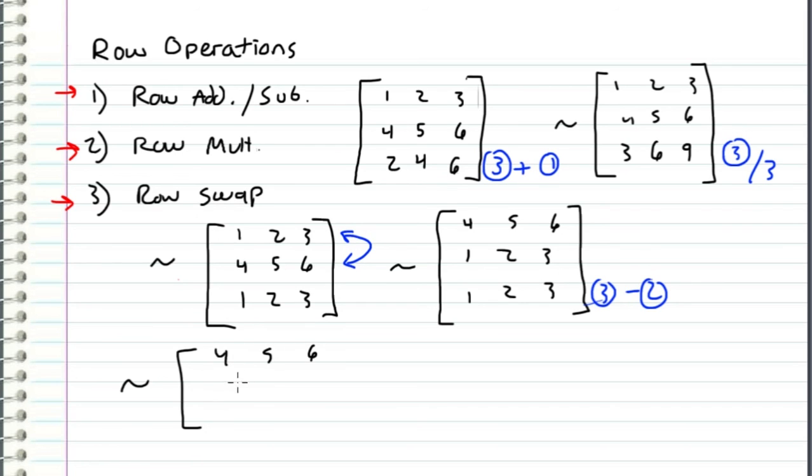four, five, six, one, two, three, and zero, zero, zero. So we can see how these row operations can reduce a matrix into a form that looks more simple. In general, the more zeros that you have, the easier the matrix equations are going to turn out.